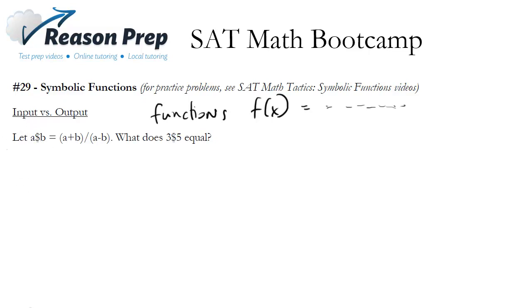It's about the input versus the output. We're putting in as our input 3 $ 5, so 3 goes in for a—wherever we see an a, we replace it with 3. And b goes in for 5—wherever we see b, we replace it with 5. Let's go ahead and write this out.